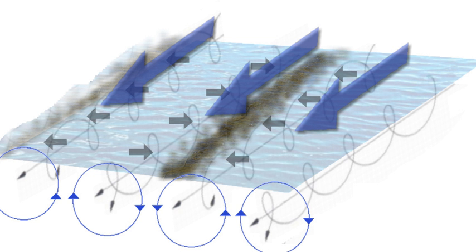Langmuir circulations circulate within the mixed layer; however, it is not yet so clear how strongly they can cause mixing at the base of the mixed layer.